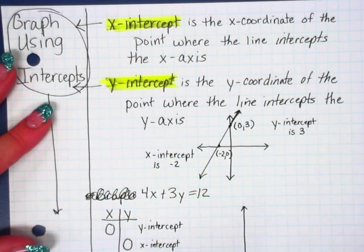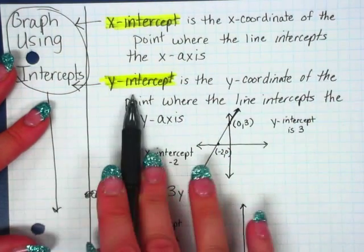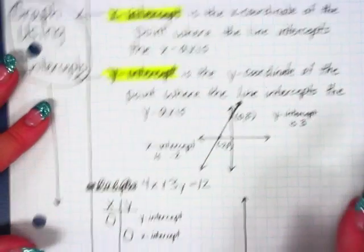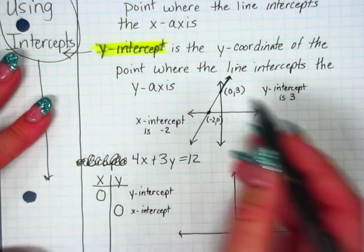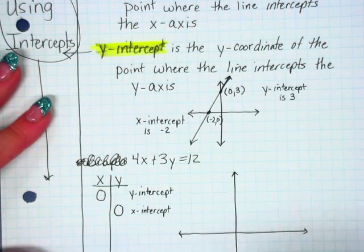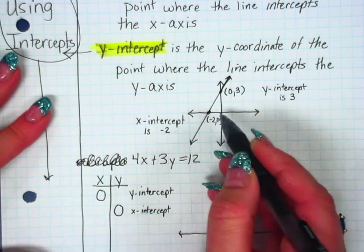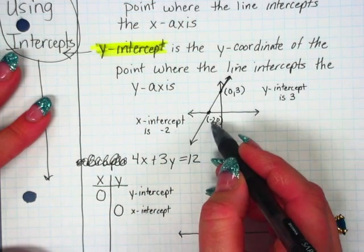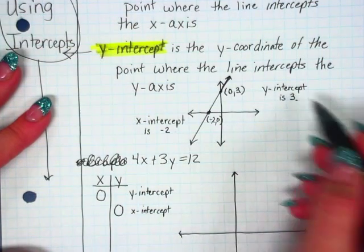Graphing using intercepts. X intercept is the x-coordinate of the point where the line crosses the x-axis. The y-intercept is where the y-coordinate of the point where the line intercepts the y-axis. So in this example, here's your x-intercept where it crosses the x. Here's your y-intercept where it crosses your y. The x-intercept is when it crosses at negative 2, 0. So the x-intercept is negative 2. Here it crosses at 0, 3. So the y-intercept is 3.